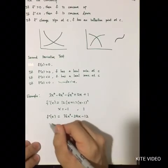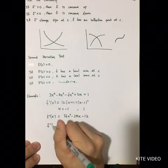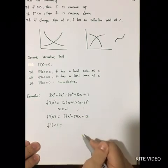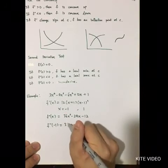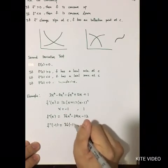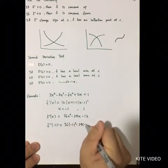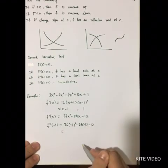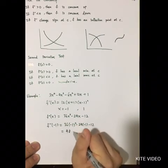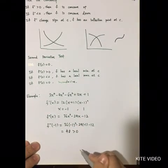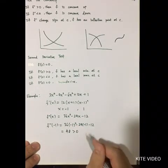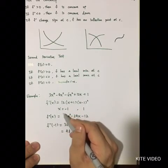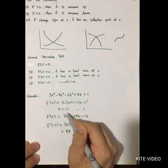Substituting the critical point x = −1 into the second derivative: replacing x with −1 gives a value of 48, which is greater than zero. Since f double prime(−1) > 0, the function has a local minimum at x = −1.